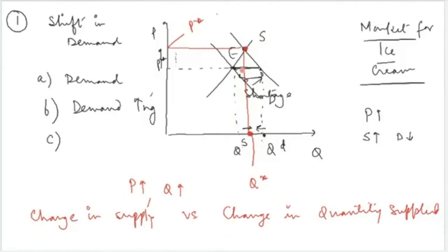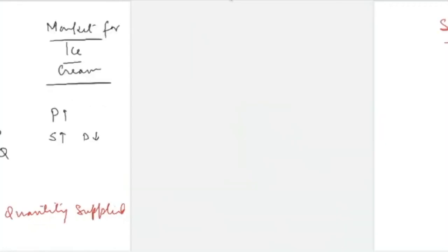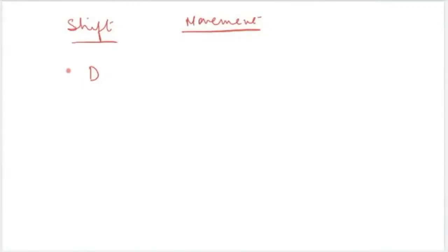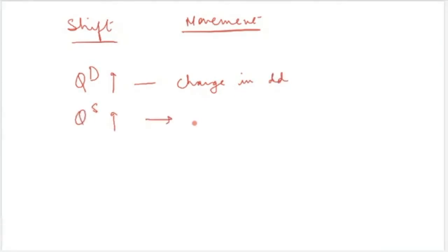On the demand side, demand has also increased, and this increase is because of the shift in the demand curve, not because of movement. So quantity demanded is increasing because of a change in demand, whereas quantity supplied is increasing because of a change in quantity supplied. This difference between shift and movement must be understood clearly.